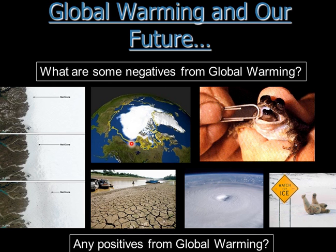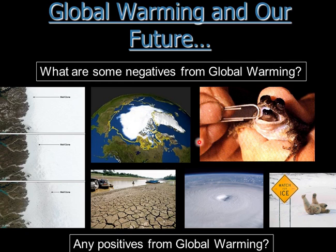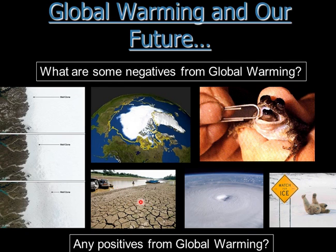As surface temperatures warm up, we're losing polar ice — for the first time you can travel the Northwest Passage, which never happened before. The oceans are rising because of melting polar ice and also because warming oceans expand. As temperatures change, species sensitive to temperature are affected — a frog that lived high on a tropical mountain is now extinct because as the mountain warmed up they had nowhere cooler to go. Polar bears are potentially going extinct, though some are starting to mate with grizzlies and may be adapting.